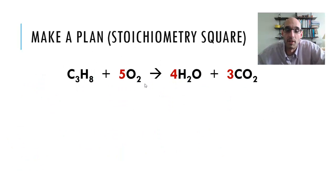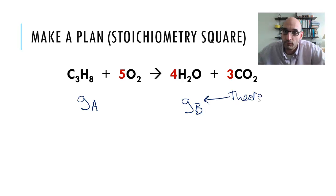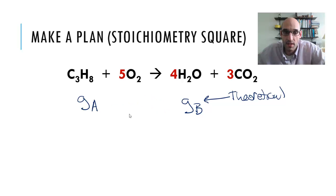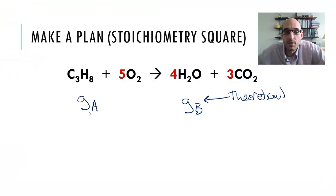So next up, let's make a plan. I call this the stoichiometric square, and this is how it's going to work. Our question provides us with grams of A — let's call it something generic. Our problem gives us grams of A. In order to go to grams of B — that's my theoretical yield, that's the target — we can't go directly from grams of one to grams of another. This is not allowed. Propane weighs a different amount than CO2, oxygen weighs a different amount than water, so we can't go directly from one to the other. Theoretical yield is always in grams.